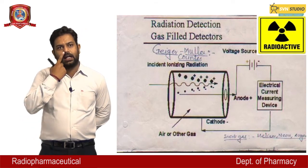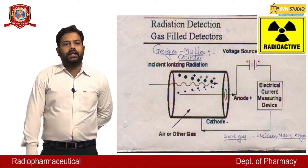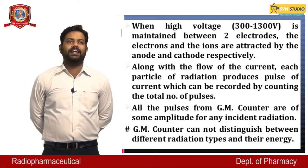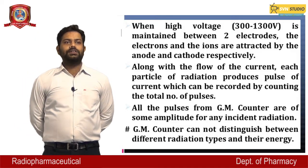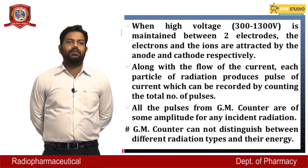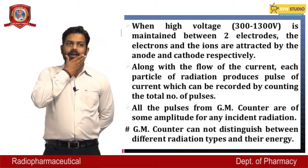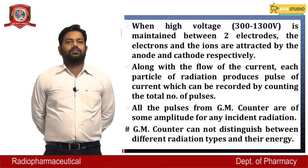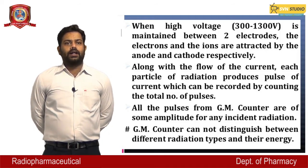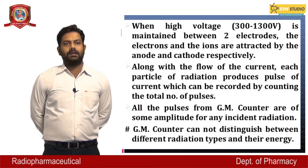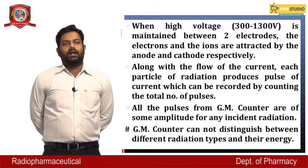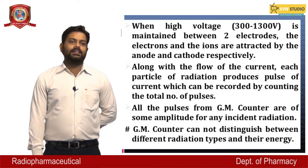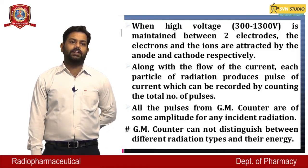Inside the GM counter, helium, neon, and argon gases are present. When a high voltage of 300–1300 V is maintained between two electrodes, electrons and ions are attracted to the anode and cathode respectively. Each particle of radiation produces a pulse of current, which is recorded by counting total pulses. The GM counter cannot distinguish between different types of radiation and their energies.